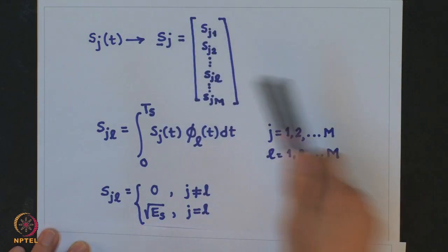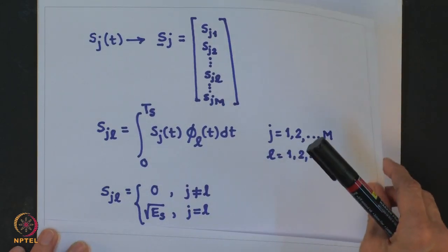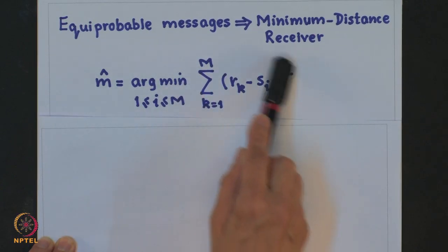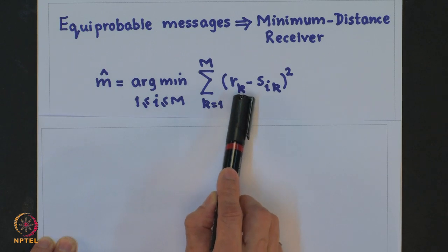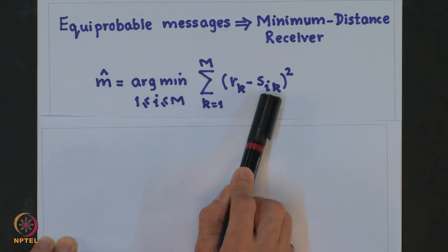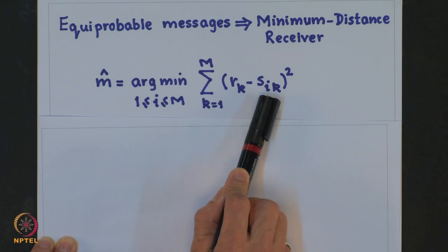We assume message signals are equiprobable, so the MAP detector reduces to the maximum likelihood detector, which in this case is the minimum distance receiver. The decision rule is to decide in favor of that i for which the squared distance between the received vector and message vector is minimum.